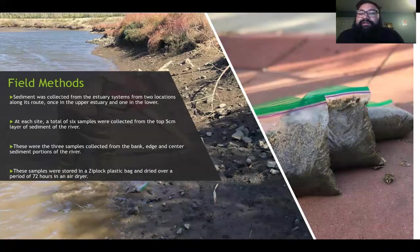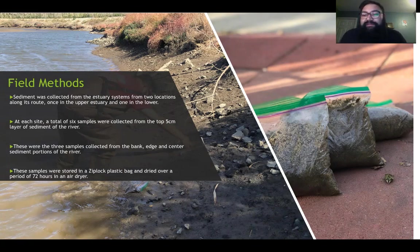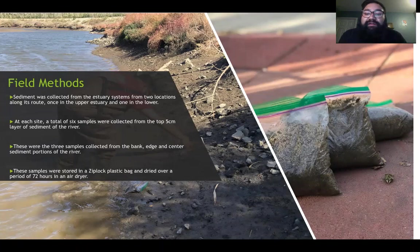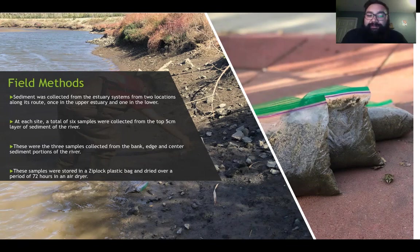Sediment was collected from six points along the estuary system, with three points along the lower half and three points in the upper half. These three points — center, edge, and embankment of the stream — were probed using a metal spoon, and sediment was collected from the top five centimeters layer of the soil within the stream. Upon collection, sediment samples were stored inside a small sandwich zip-lock bag, labeled, and transported back to campus, where they were stored inside a laboratory-grade dryer for at least 72 hours to ensure all moisture content was removed. This process was necessary in order to ensure an accurate and standardized result was achieved.